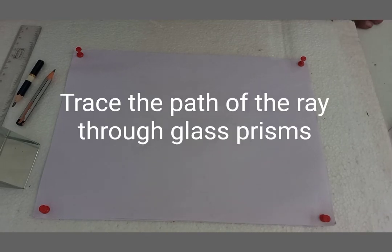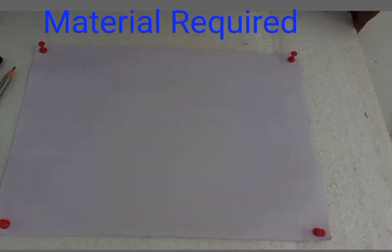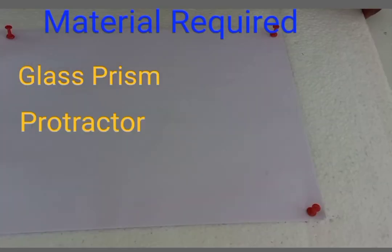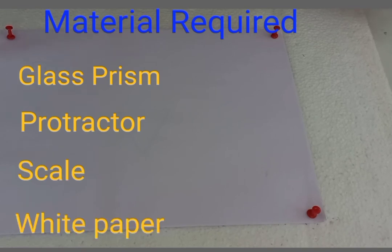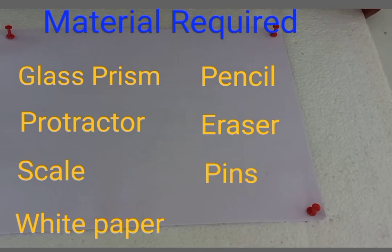How to trace the path of the ray of light through a glass prism. Materials required: glass prism, protractor, scale, white paper, pencil, eraser, pins and drawing board.